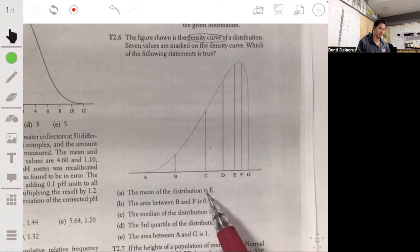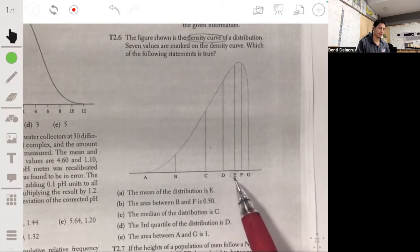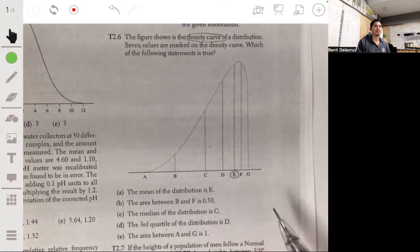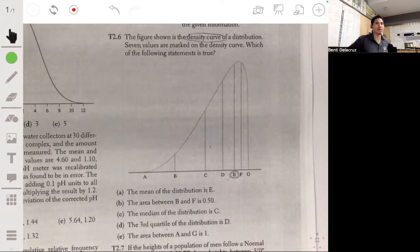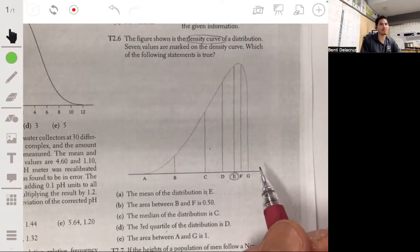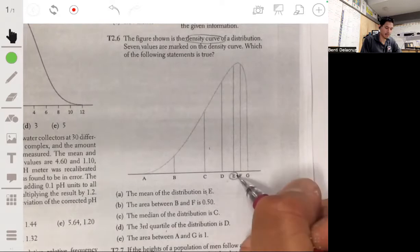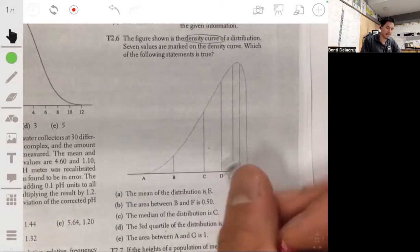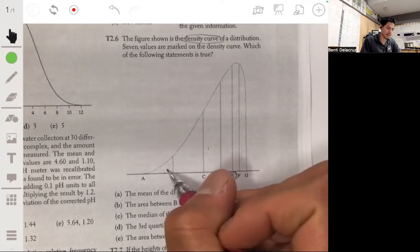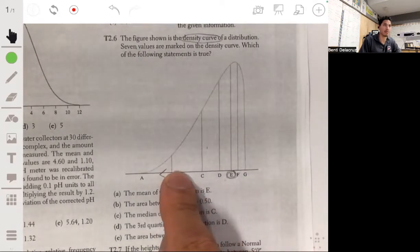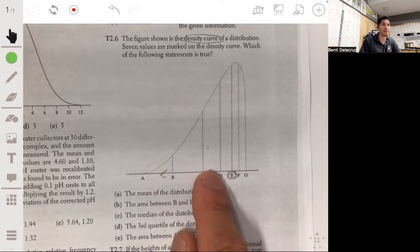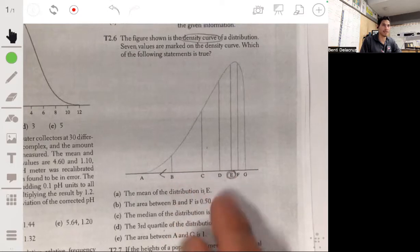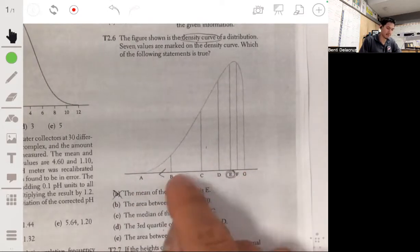So the mean of the distribution is E. Now we're saying that the mean is here. This curve is skewed, you can't really tell what the mean is. But actually it's clearly wrong because remember, means get pulled towards the tail. So the mean will have to be somewhat towards the tail, probably between C and D. So it's not going to be A for sure. The mean will be more to the left.